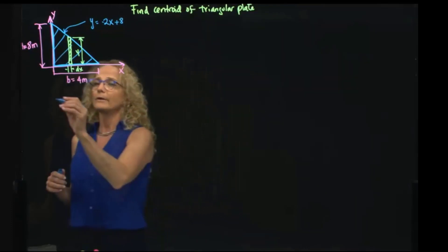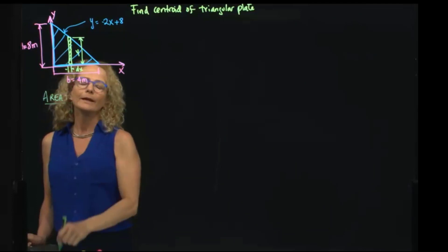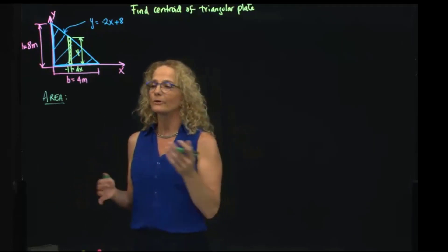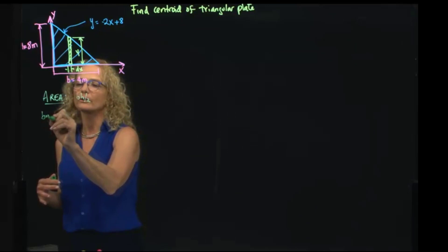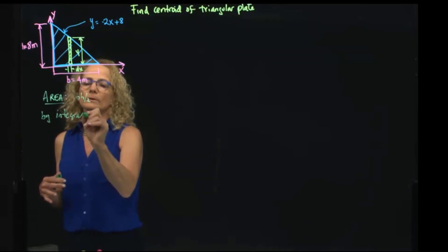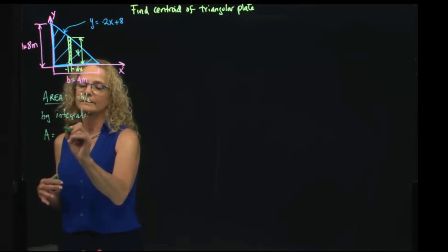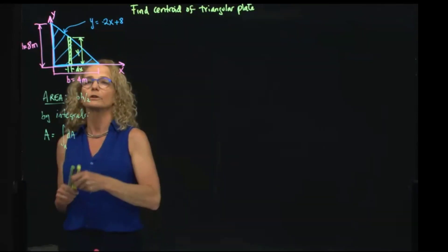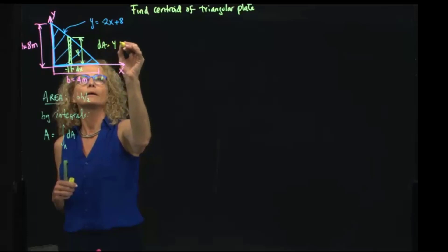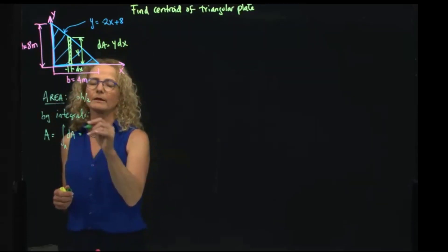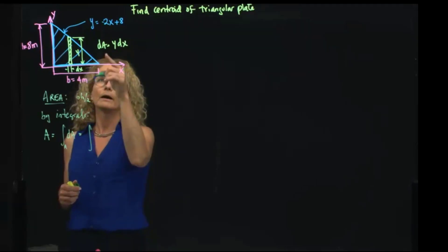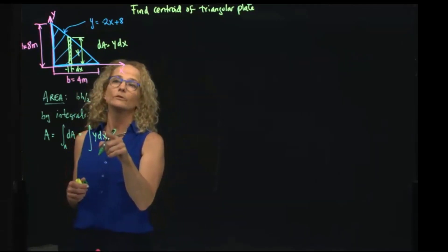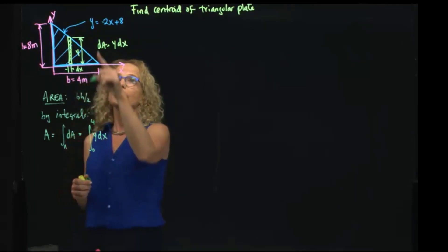If we want to calculate the area, we already know that the area is base times height divided by 2, but let's do it by integrals. By integrals we have that area is the differential of the area. But since I am integrating this strip, my differential of area becomes Y dX. The limits of integration will be in the variable that I am integrating, which is 0 to 4.